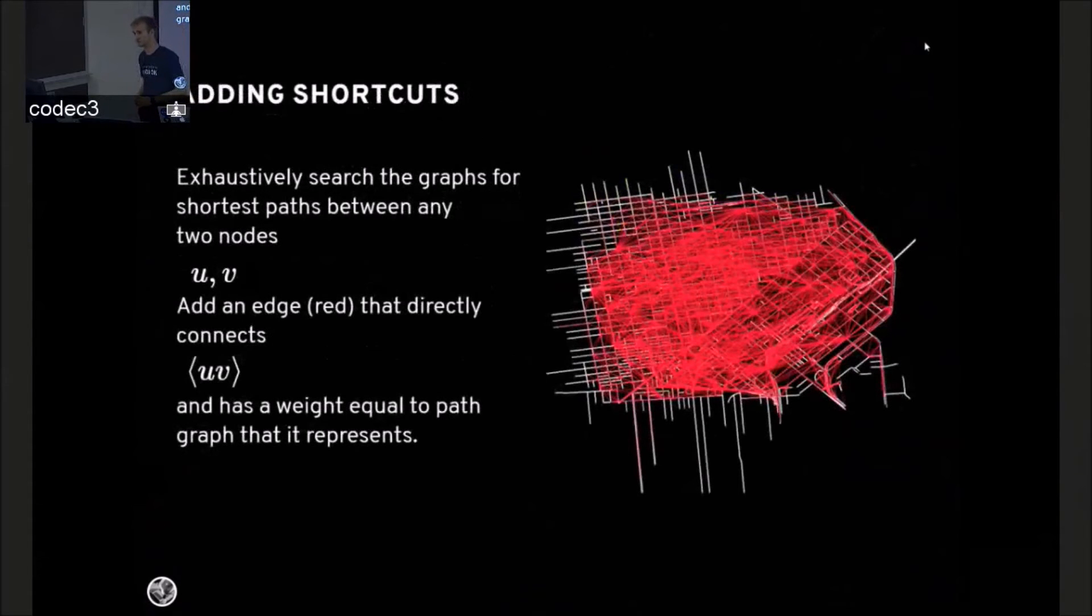Adding shortcuts is also helpful. You can exhaustively search the graph beforehand and find shortest paths between two nodes, and add edges that represent their shortest paths. An idea here is that if you have longer edges in general, then a Dijkstra search will reach a given destination faster in a fewer number of hops.